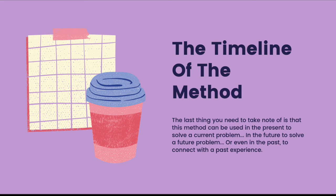The last thing I want to talk about is the timeline of the method. This method can be used in the present to solve a current problem, in the future to solve a future problem, or even in the past to connect with a past experience. When it comes to the timeline of the method, there is another system called the visual timeline. You might have gone through it already, and if not, you're going to go through the lecture on the visual timeline soon and see how it connects to association and dissociation.